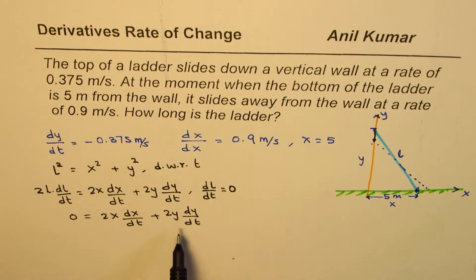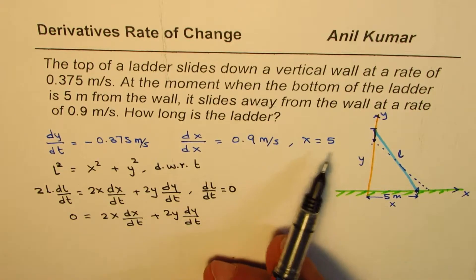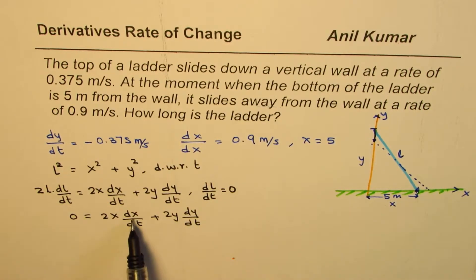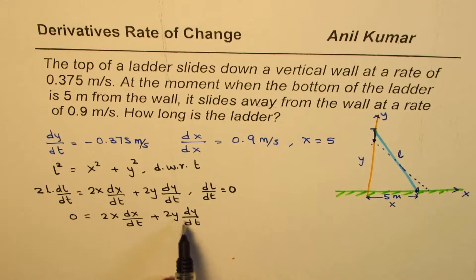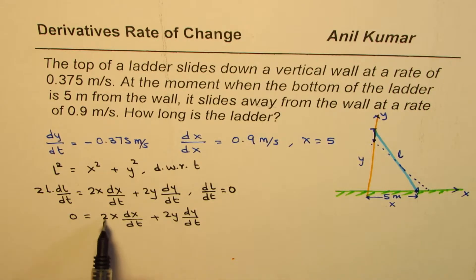Now from this equation we know what x is, which is 5. We know dx/dt, dy/dt. We can find y, correct? So let's find y from this equation after substituting the values.